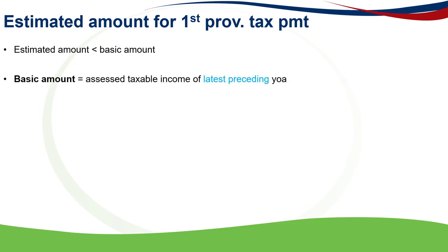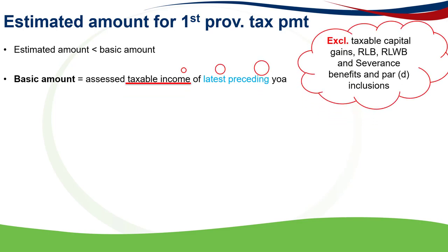The basic amount according to paragraph 19 of the fourth schedule is the assessed taxable income of the latest preceding year of assessment — so the year before the one that we are trying to estimate the taxable income — excluding any taxable capital gains, retirement lump sums, withdrawal benefits, severance benefits, as well as other paragraph D specific inclusions. So the taxable income of the latest preceding year of assessment should exclude any taxable capital gains, retirement lump sums, withdrawal benefits, as well as any specific inclusions.